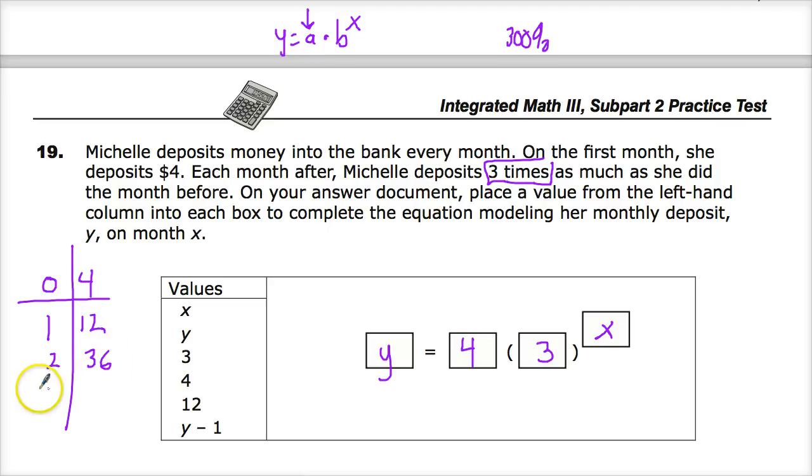This is three times this, three times this. And the third would be 108. So you just test to make sure it's multiplying by three each time.